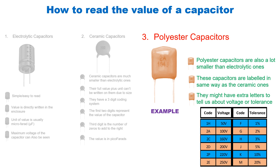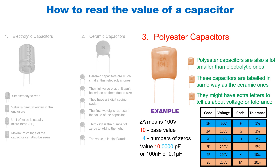Let's read an example polyester capacitor labeled '2A 104 J'. Referring to the table: '2A' means a working voltage of 100 volts. The number '104' means a base value of 10 with four zeros added, giving 100,000 picofarads — which is 100 nanofarads or 0.1 microfarads. The letter 'J' indicates 5% tolerance. So this capacitor is 0.1 microfarads, rated for up to 100 volts, with a 5% tolerance.